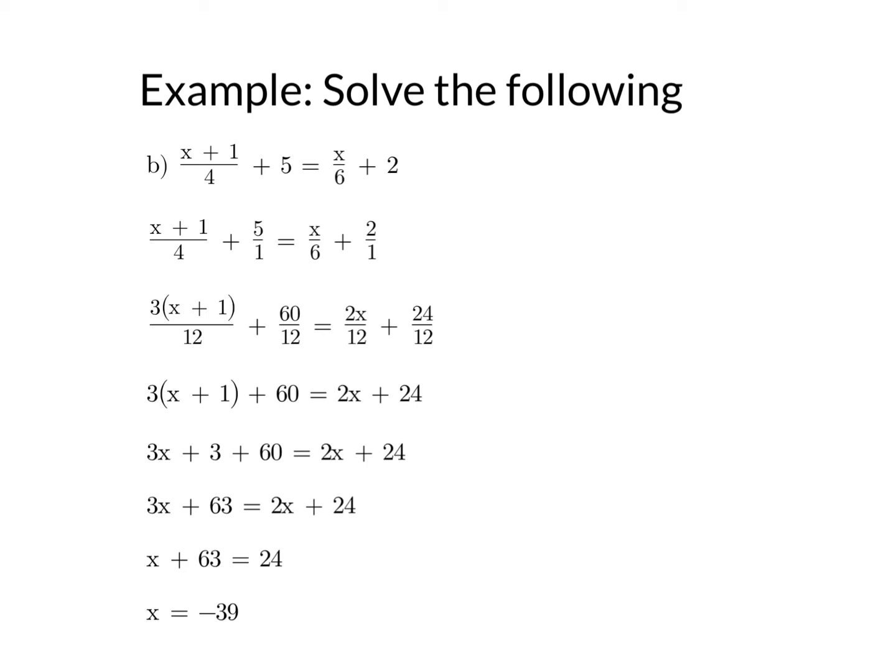Then I've got the equal sign. Then I've got over 6, so I double the bottom and double the top, so I get 2x over 12. And then again, we're over 1, so I need to times the bottom by 12, so I times the top by 12, and I get 24 over 12.